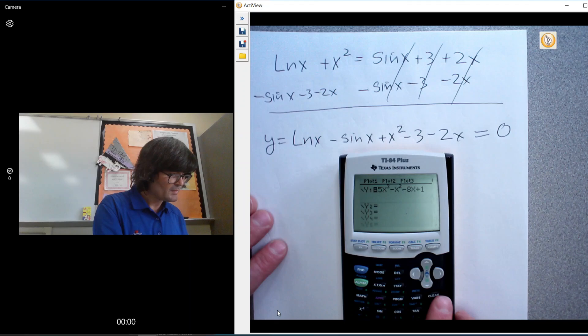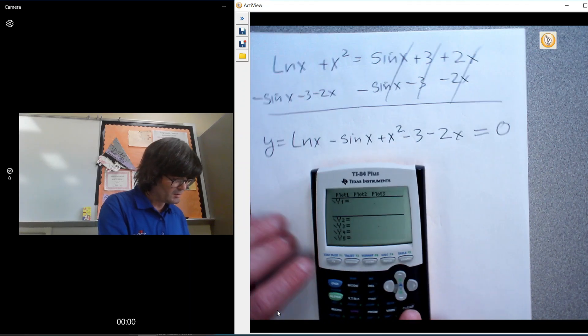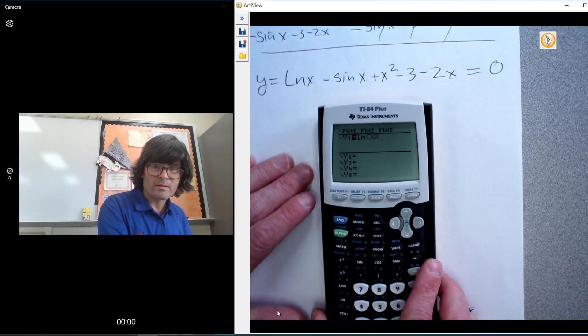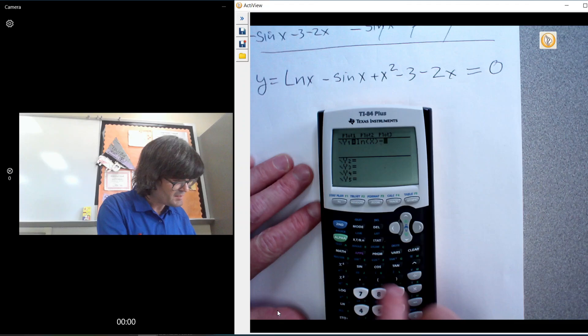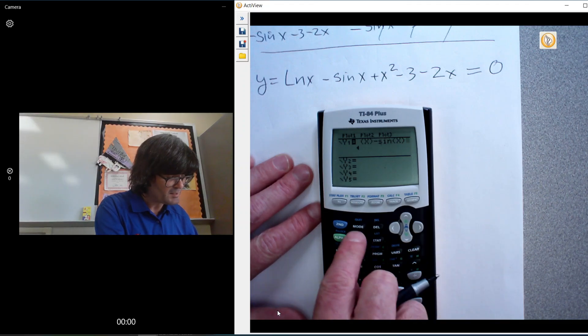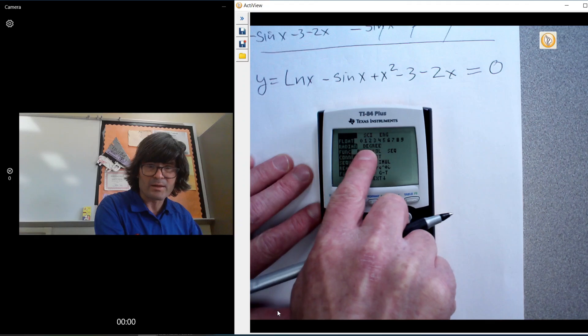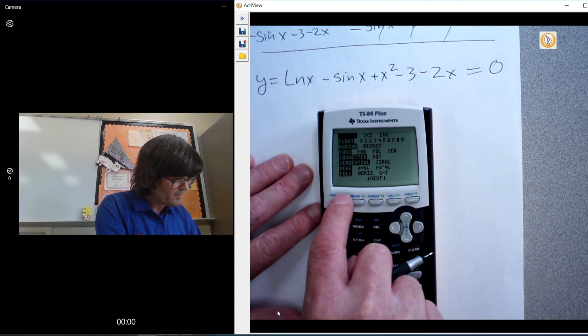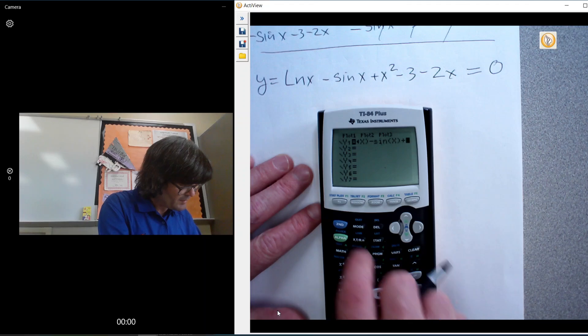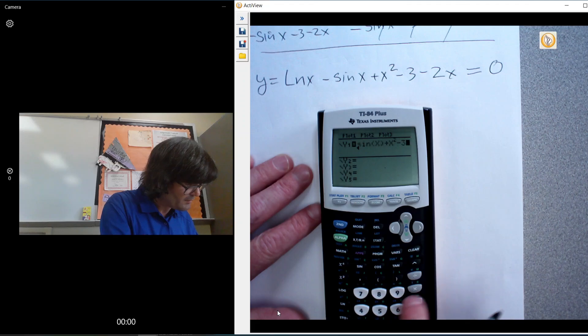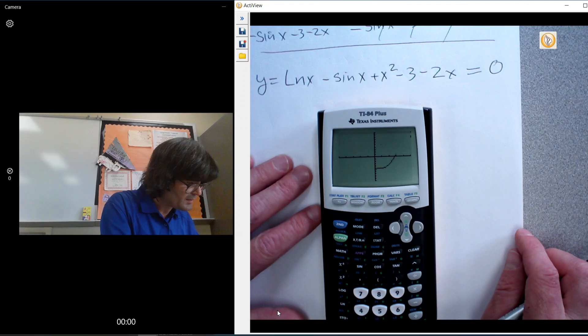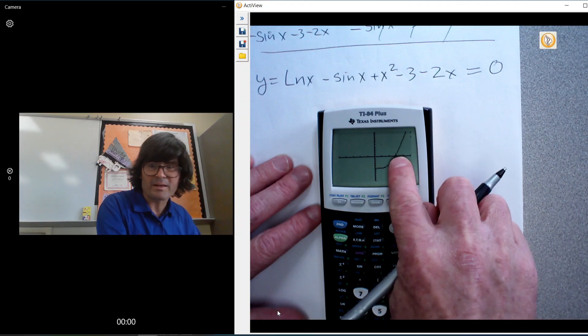So we're going to set this up. Natural log of x. Again, right there. Minus sine of x. Make sure your calculator is in radians. Mine is. Mode right here will show you. I'm in radians right now. So we had sine x plus x² minus 3 minus 2x. We'll hit graph. And I see a crossing point right there.